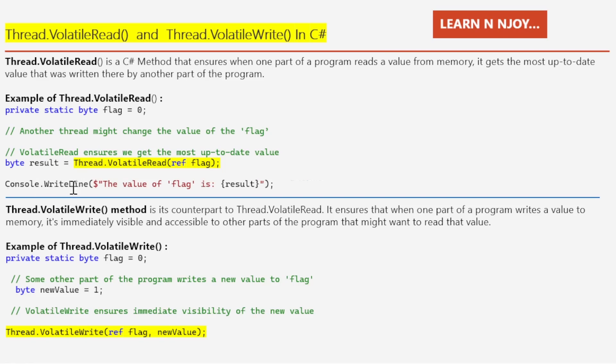Via the statement Console.WriteLine("The value of flag is: " + result), Thread.VolatileRead is used whenever we want to get the most up-to-date value updated by another thread. Now let's talk about its counterpart, Thread.VolatileWrite. This method ensures immediate visibility of a newly written value to other parts of the program — when one part writes a value to memory using VolatileWrite, it becomes instantly accessible to other threads that might want to read it.